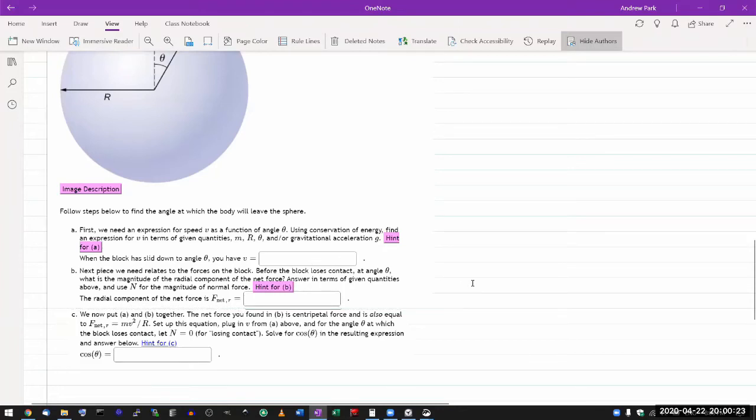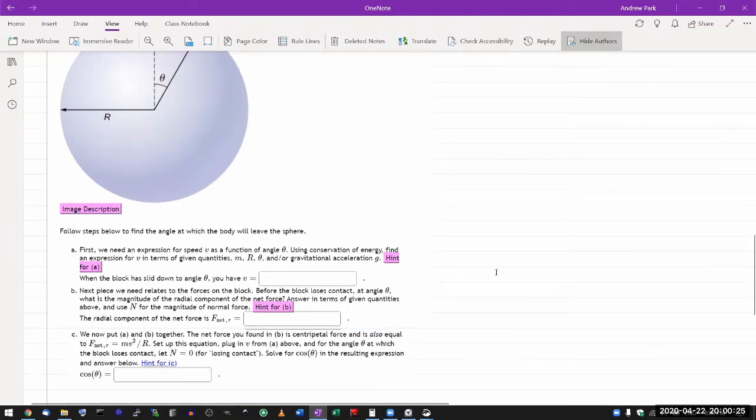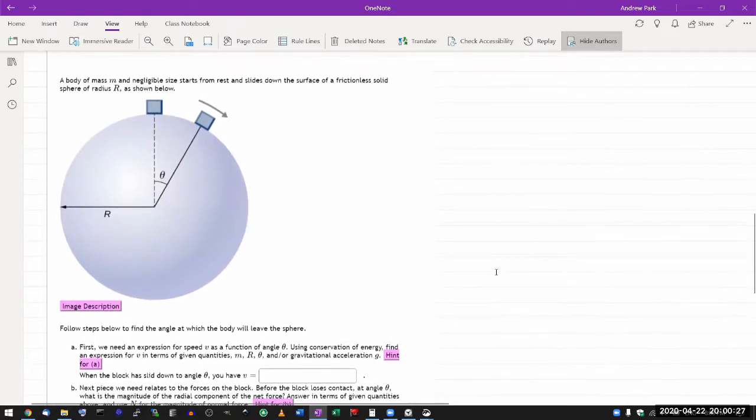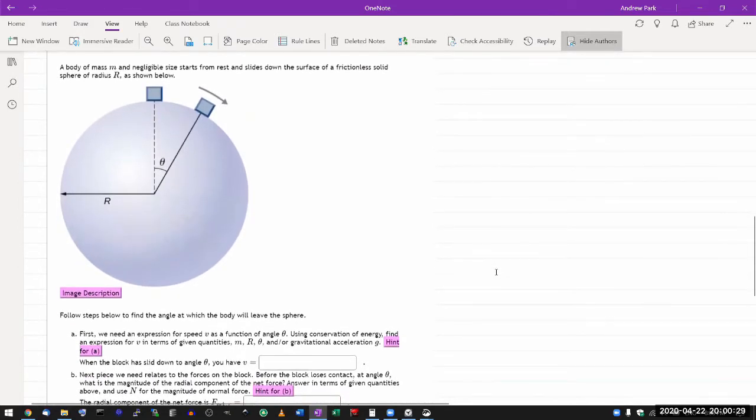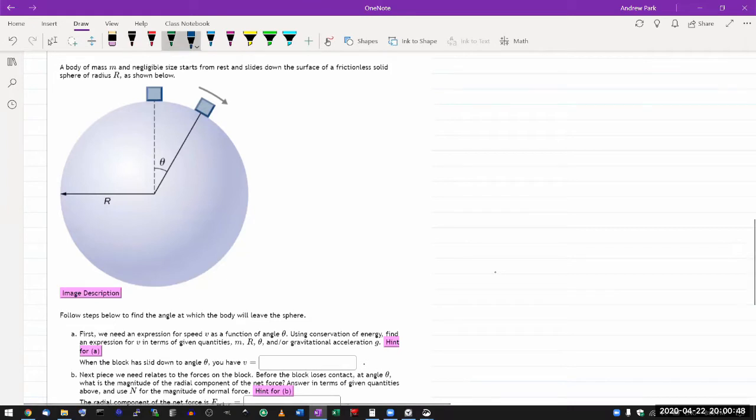All right, so that's the question. I think I have probably enough space on the side to use the side. So this is our class question. I'm glad there's a request to do this because it's a real question I should have done a while ago. It says a body of mass M and negligible sides starts from rest and slides down the surface of a frictionless solid sphere of radius R as shown below.